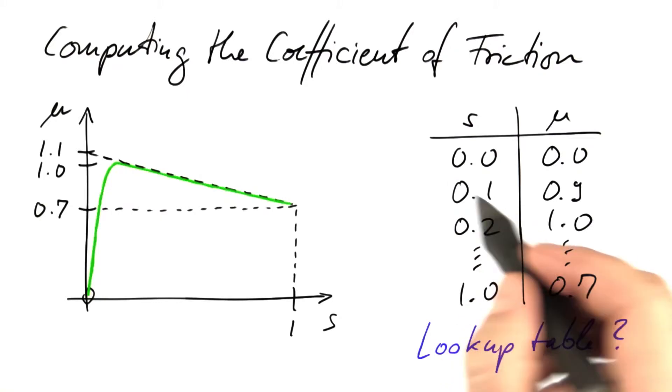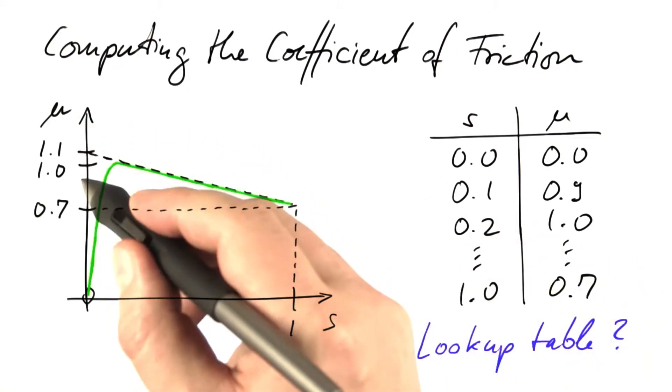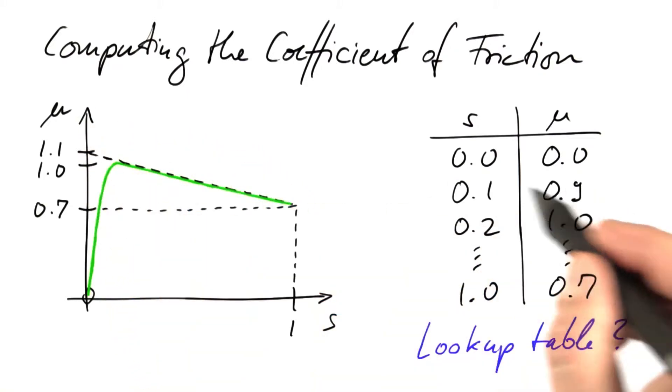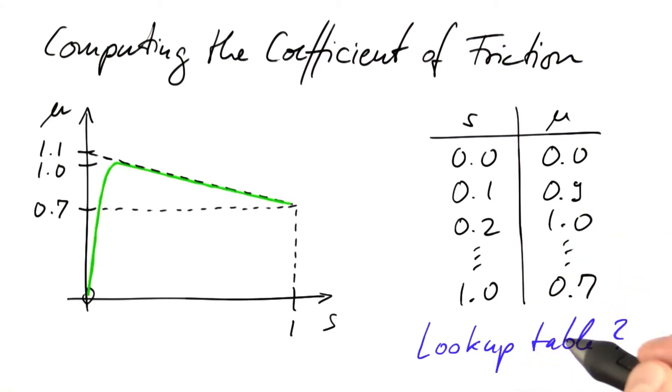If we input a wheel slip of 0.1, we output a coefficient of friction that's 0.9 and so on. This would constitute a lookup table.